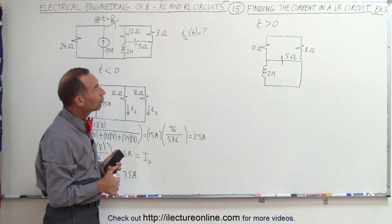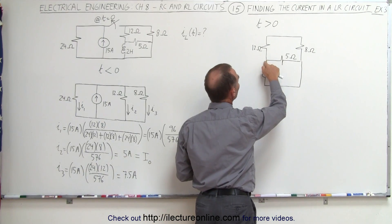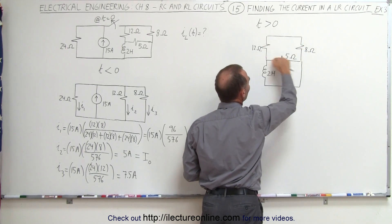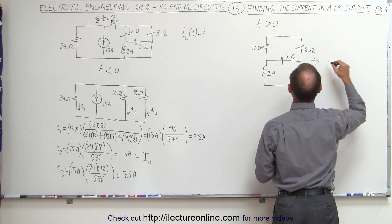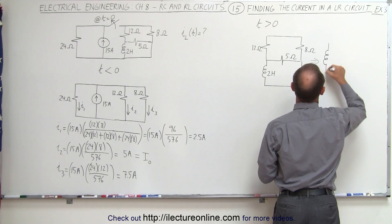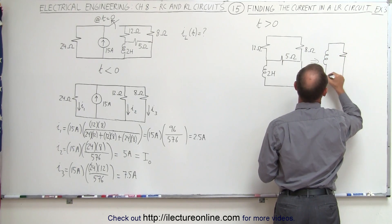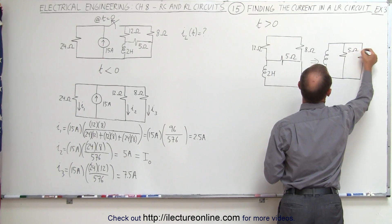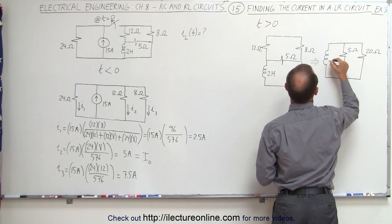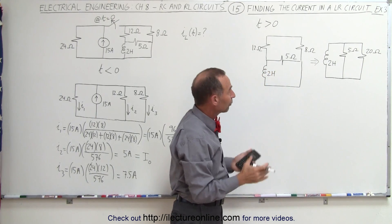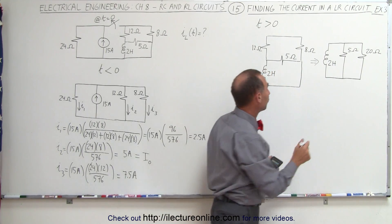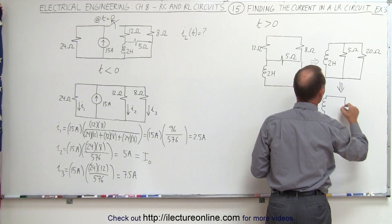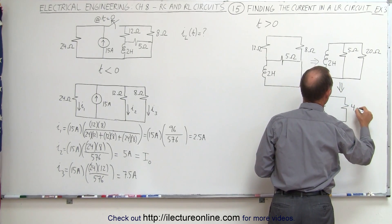Now we need to find the equivalent circuit. Relative to the inductor, from one terminal to the other we have two paths: one path gives us 12 plus 8 equals 20 ohms, and the other path gives us 5 ohms. So the equivalent circuit has a 5-ohm resistor and a 20-ohm resistor in parallel with the 2-Henry inductor. Taking the product over the sum: 5 times 20 equals 100, divided by 25, equals 4 ohms. The most simplified equivalent circuit is a 2-Henry inductor with a 4-ohm equivalent resistance.